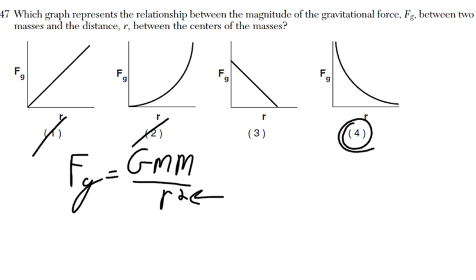And the last thing to consider is, does the graph that you chose make sense? Does it make sense that, as R increases, so as the distance between these two objects gets further apart, does it make sense that the force of gravity would be weaker?